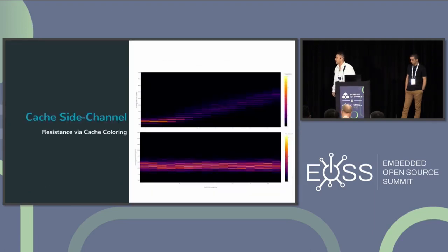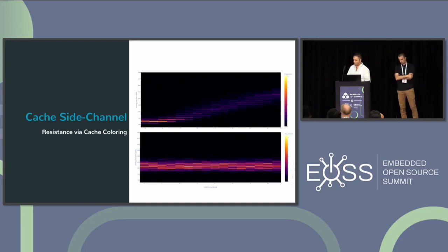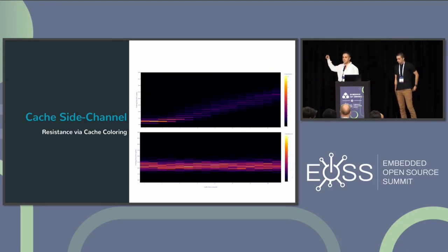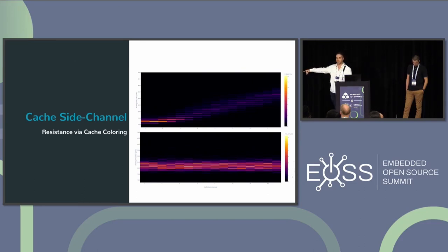We implemented from scratch a cache partitioning technique, which is very good for safety in terms of guaranteeing freedom from interference, and also for security. The heat map shown measures the timing channel that attacks like Spectre leverage to recover secrets. When we apply the cache coloring technique — effective for safety — we also completely eliminate this channel. These are real experiments with BAU.